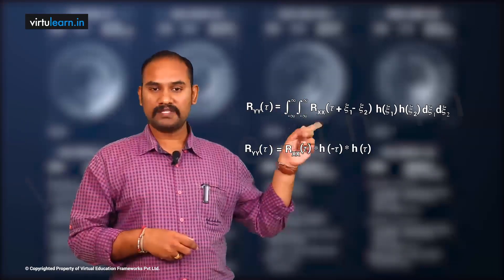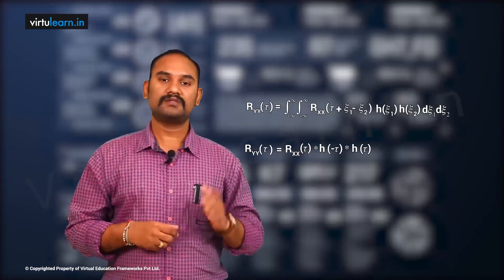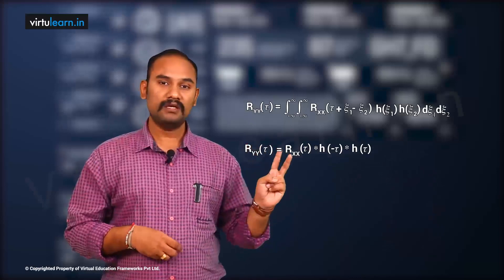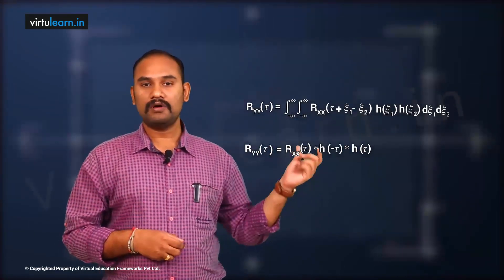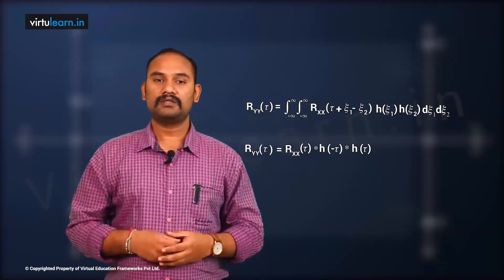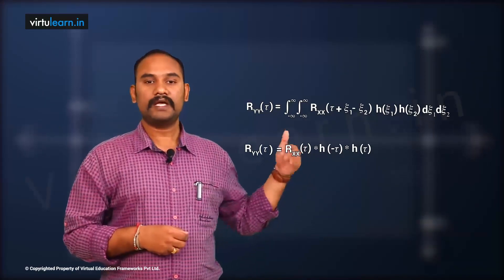For one term we have a positive ζ and for the other a negative ζ, so the impulse response appears as h(−τ) ★ h(τ) — one with minus τ and one with plus τ — but we get h(τ) two times. So: Ryy(τ) = Rxx(τ) ★ h(−τ) ★ h(τ), which is the two-dimensional convolution of the input ACF giving the ACF of the response.